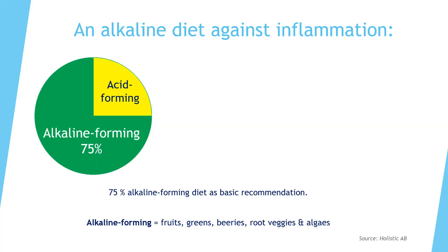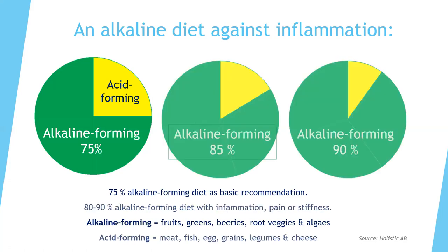The basic recommendation is about 75% alkaline-forming foods. If you feel you have an inflammation starting, they even recommend 85 to 90%. Acid-forming foods are mainly meats — with all kinds of hormones, especially industrial meat — fish if it's also industrial rather than wild-caught, eggs, legumes, grains, and cheese.